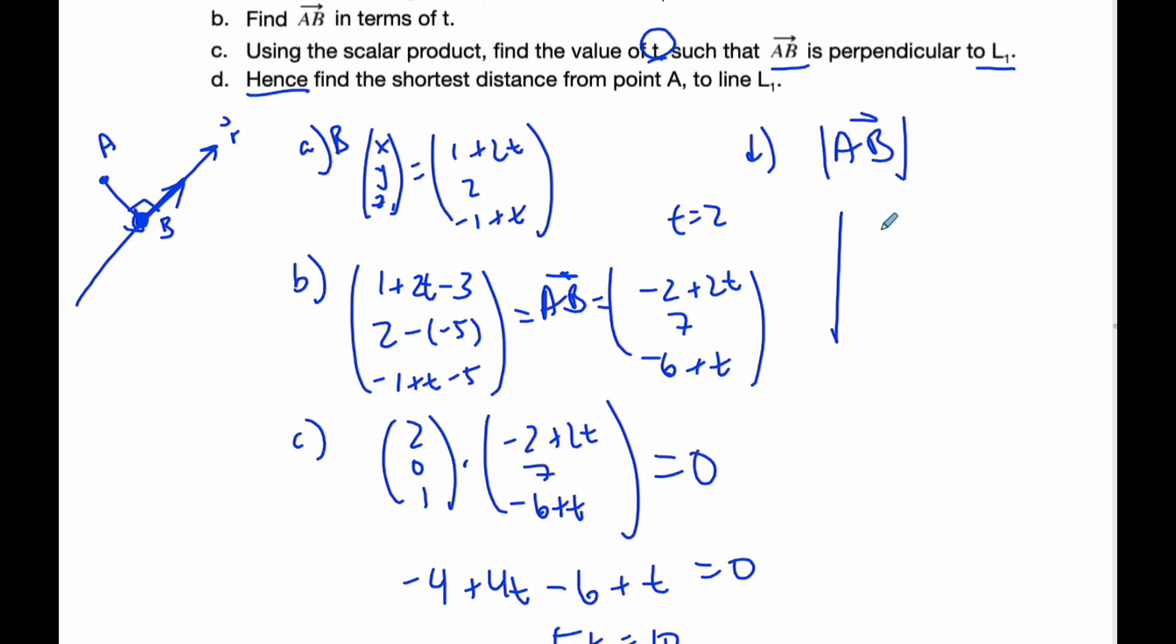...is 2, 7, and -2+2 is -4. I'm going to look for the magnitude of this vector, which is going to be 4+49+16 if I square it, which gives the square root of 69 as the shortest distance from A to B because they are perpendicular.